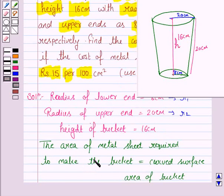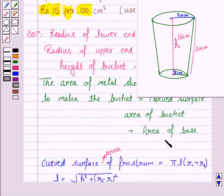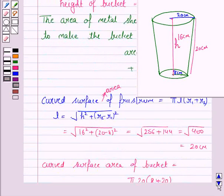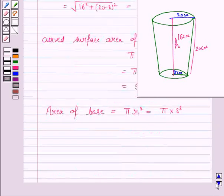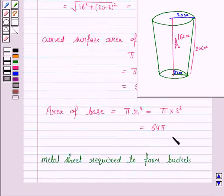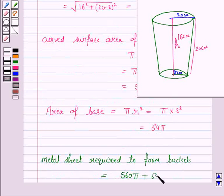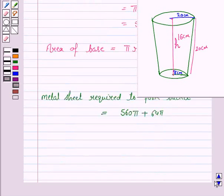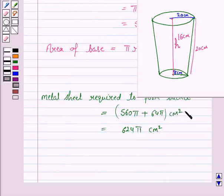Now, the area of the metal sheet required to form the bucket is the curved surface area plus the area of the base. The curved surface area is 560π and the area of the base is 64π. So the total area of the metal sheet is 560π + 64π = 624π cm².